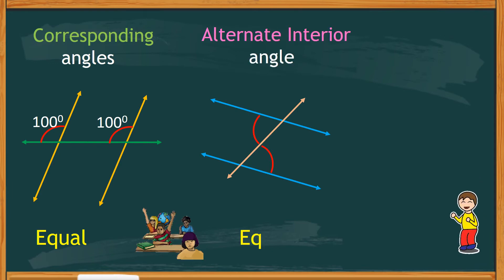Alternate interior angles are also equal. So again, if one is 75 degrees, then the other is also 75 degrees.